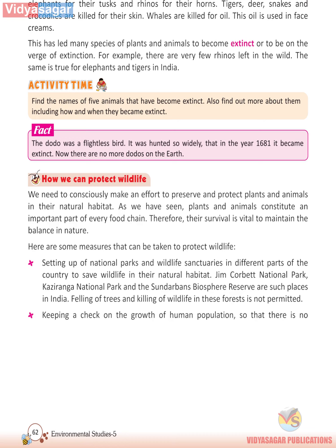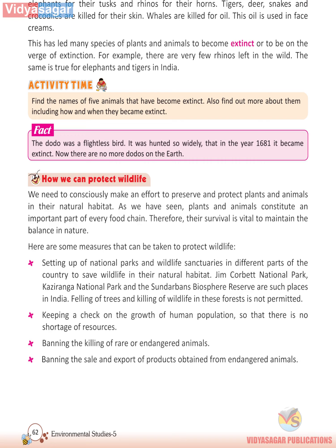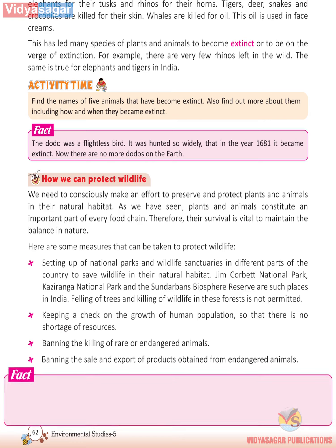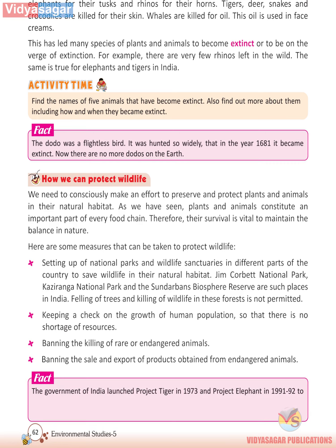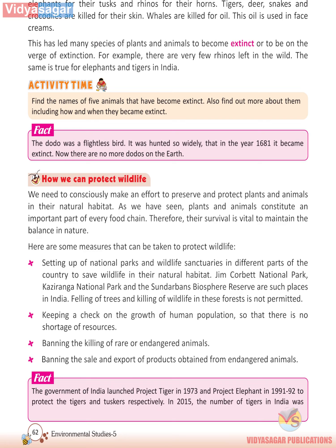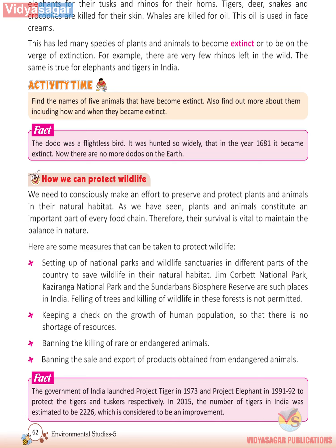Other measures include keeping a check on the growth of human population, banning the killing of rare or endangered animals, and banning the sale and export of products obtained from endangered animals. The Government of India launched Project Tiger in 1973 and Project Elephants in 1991-1992 to protect tigers and tuskers respectively. In 2015, the number of tigers in India was estimated to be 2,226, which is considered to be an improvement. Afforestation and celebrating van mahotsavs also promote the protection of forests.